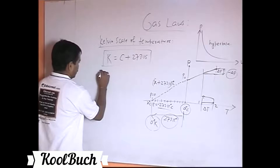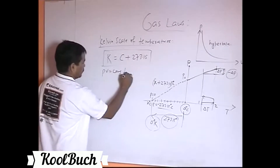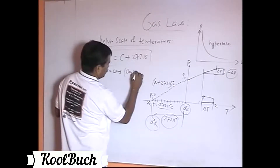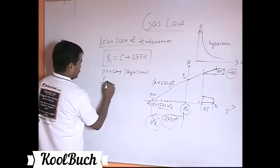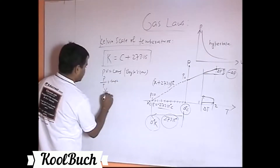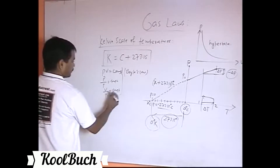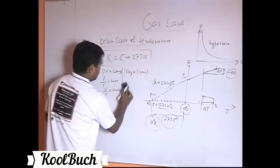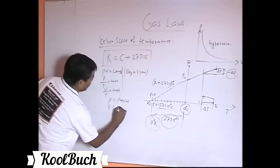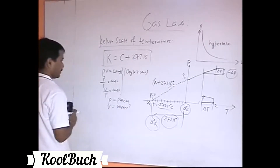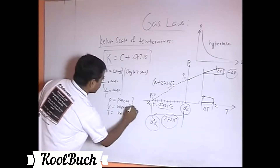It's very important to note that in gas laws — whether it's Boyle's Law (PV = constant), the pressure-temperature law (P/T = constant), or the volume-temperature law (V/T = constant) — the units must be correct: pressure in Pascal, volume in cubic meters, and temperature in Kelvin.